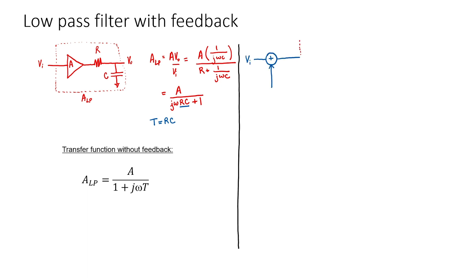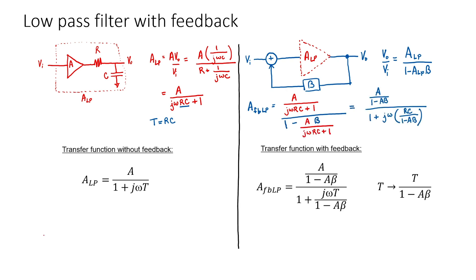Let's put that low-pass filter into a feedback network. We've already calculated the transfer function for a feedback network in general. Let's call the overall gain AFB low-pass. We've now found the transfer function with feedback. I can make some observations about this transfer function. Knowing that A beta is a negative number, the gain has been reduced. Furthermore,